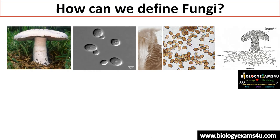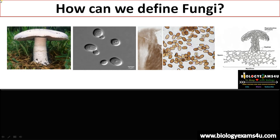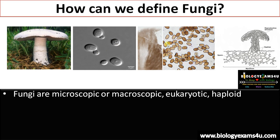How can we define fungus? It's a special group of organisms that is totally different from plants and animals. Previously we included this group under plants, but now we know that it is a separate kingdom. This is the familiar fungus Agaricus, this is yeast, and these are the spores. Let us list out the characteristics of fungus in order to define it.